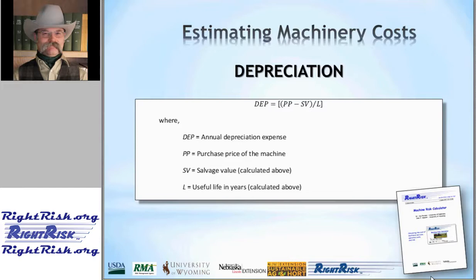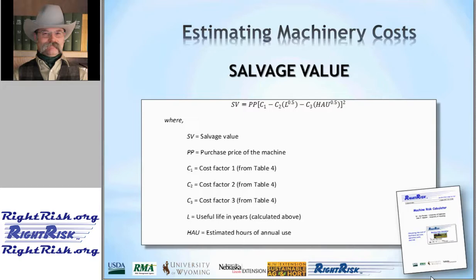This software uses a linear approach — an equal amount of machine value is calculated to go away year by year. The depreciation formula includes the purchase price, the useful life, and the salvage value estimated as remaining at the end of useful life. We have a separate formula for calculating that salvage value, which includes a number of different cost factors available in the guide.